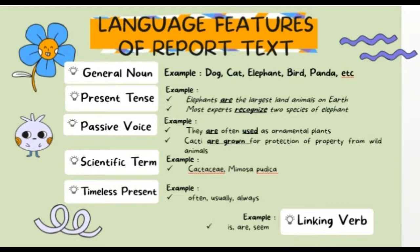The formula is: subject, followed by to be (am/is/are), then verb 3 or past participle. For example: 'They' as subject, 'are' as to be, 'recognized' as past participle. Next, scientific term or Latin names — example: Cactaceae, Limosum, Budica. Next, timeless present — these are time adverbs, example: often, usually, always.